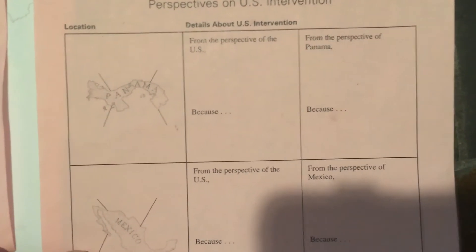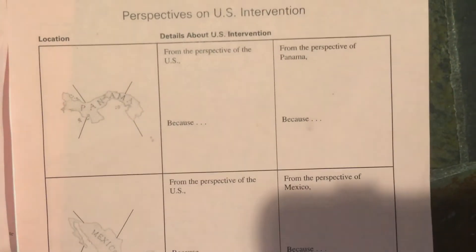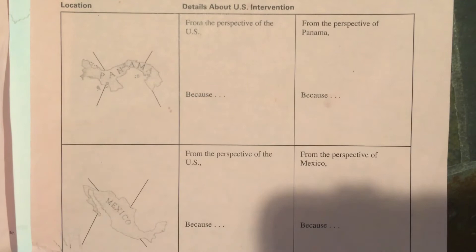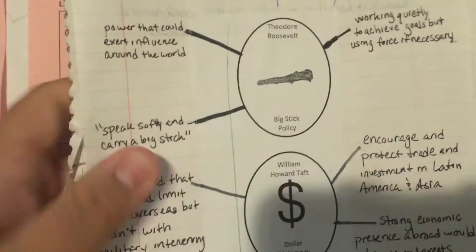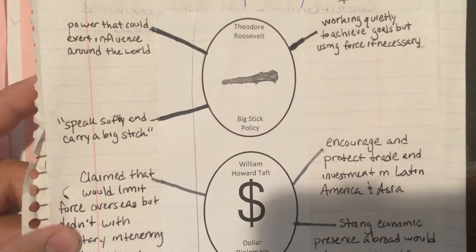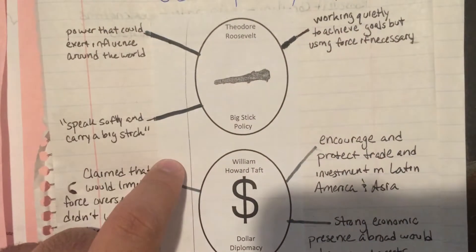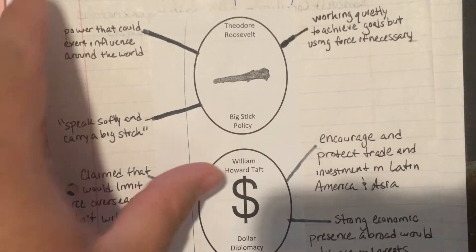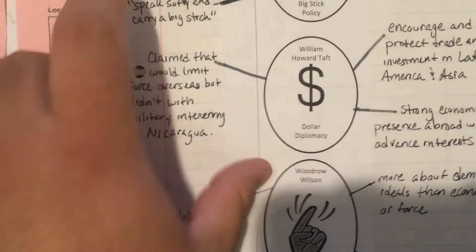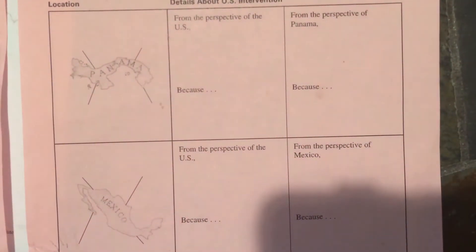All right, folks, so what we're going to do today is pretty simple. Last time we met, we took a look at the different policies and we wrote down little tidbits of information on each policy that made it look like this — we have a big stick, three branches going out, a dollar, three branches, moral, three branches. So we're going to do something like that today, but just with the different countries that the U.S. intervened with during this particular time of imperialism leading up to World War I.